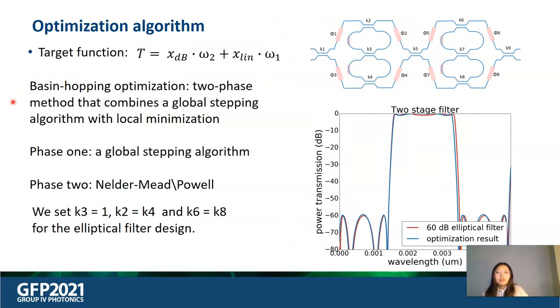As an alternative optimization method, we utilize a global optimization algorithm based on basin hopping. Basin hopping is a two-phase method that combines a global stepping algorithm with local minimization. We can still use the Nelder-Mead method for the local minimization phase. The number of basin hopping iterations is set according to the difficulty of the problem. We can start from a random initial position and try to optimize it to a 60 dB elliptical filter. The final result is shown in this figure here.